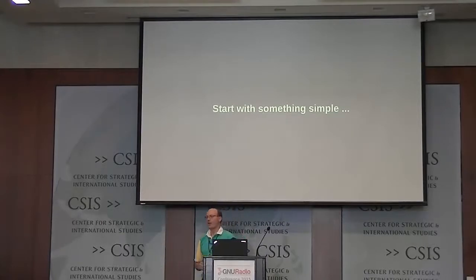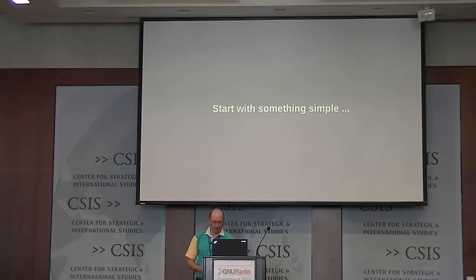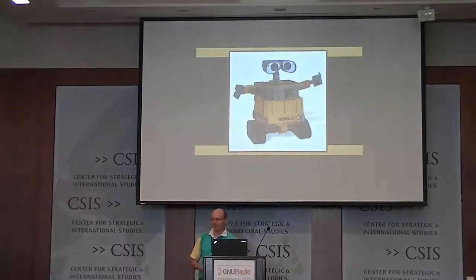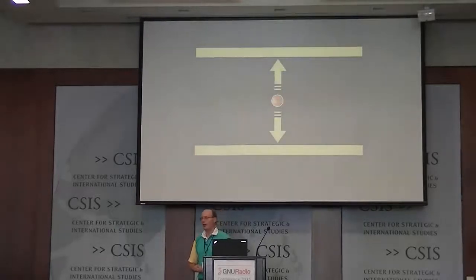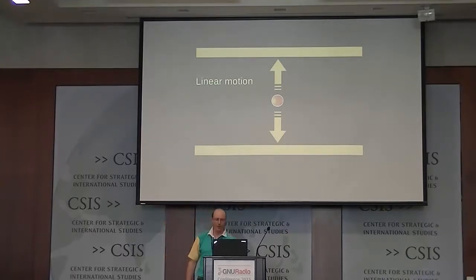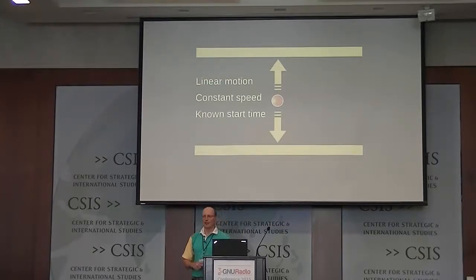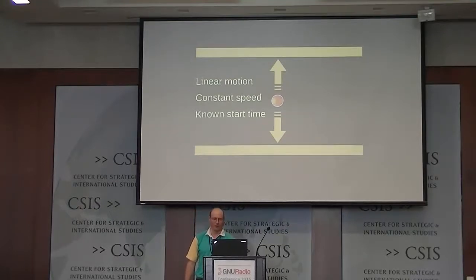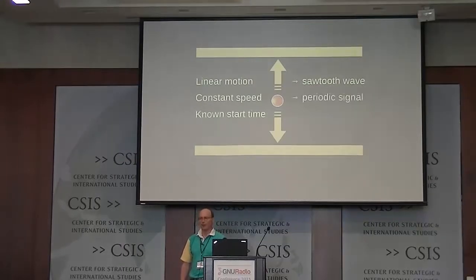I was trying to think how to present this without math — just concepts. The concept I'm going to use has nothing to do with signals. We're going to deal with linear motion: a toy robot you wind up, and it goes to a wall, hits the wall, turns around, and comes back. It runs at a constant speed, and importantly, we know exactly what time we set it off. In the signals domain, this would be a sawtooth wave — it's a periodic signal.